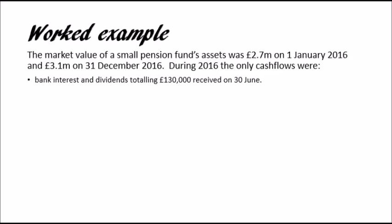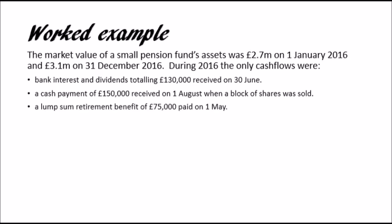Bank interest and dividends totaling 130K. Remember, this is bank interest, so this is not new money, so ignore. A cash payment of 150,000 received on 1st of August when a block of shares was sold. Again, this is based on the shares, ignore. However, a lump sum retirement benefit of 75,000 paid on 1st of May. This is from a pension scheme, so this is new money. In fact, this is paid, so this would be a negative figure. And a contribution of 50,000 paid, this would be a positive figure.